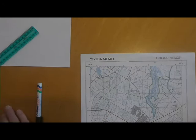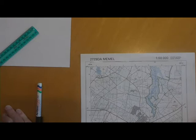Okay, looking at the 1 in 50,000 map, in this case of Myanmar, 2729 DA Myanmar. Just to remind you, the 27 tells us that's 27 degrees of latitude south and 29 degrees east longitude.